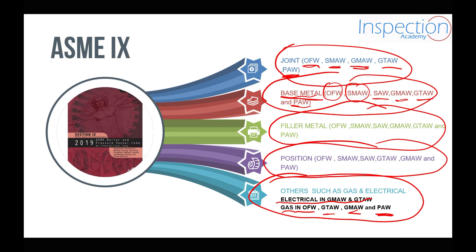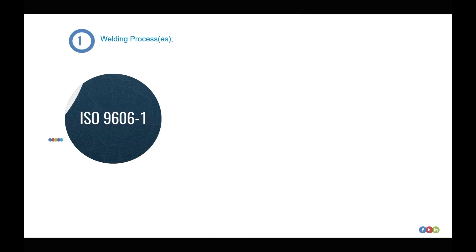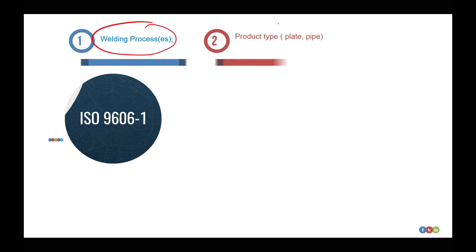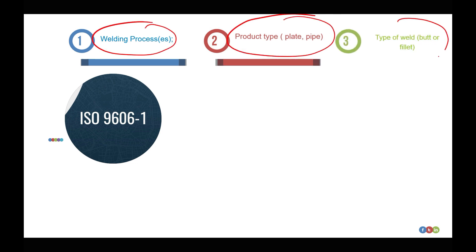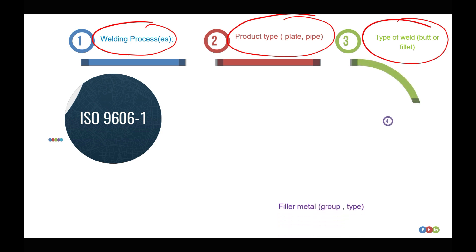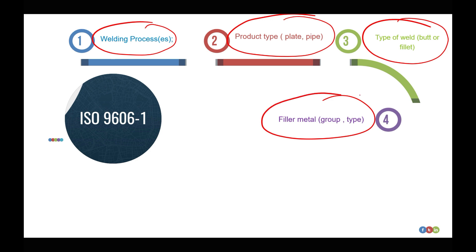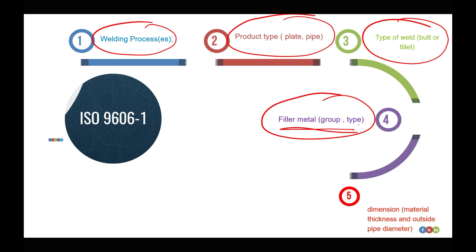Let's go back to the ISO code. According to the ISO code, we have variables for welding process, product type — whether welding a plate or a pipe — type of weld — whether welding butt or fillet weld — and filler metal, which means the group or the type of the filler metal.